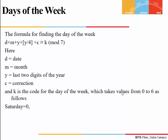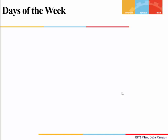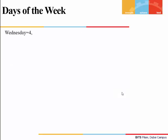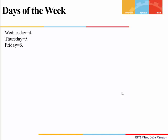The codes for the days of the week are: Saturday = 0, Sunday = 1, Monday = 2, Tuesday = 3, Wednesday = 4, Thursday = 5, and Friday = 6.